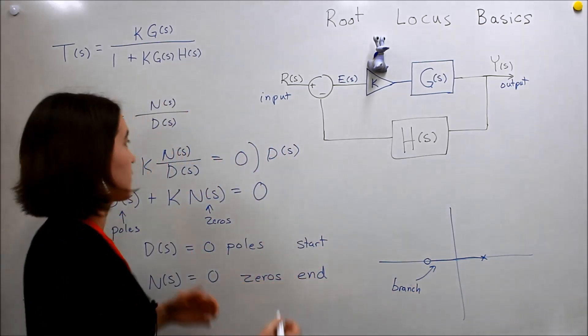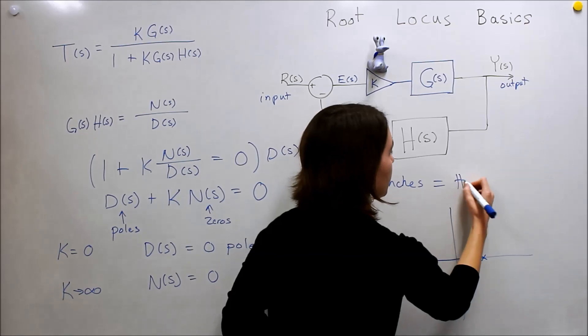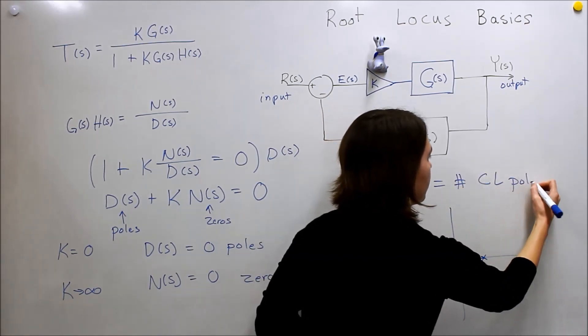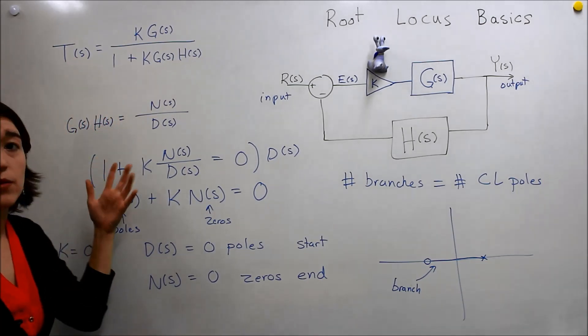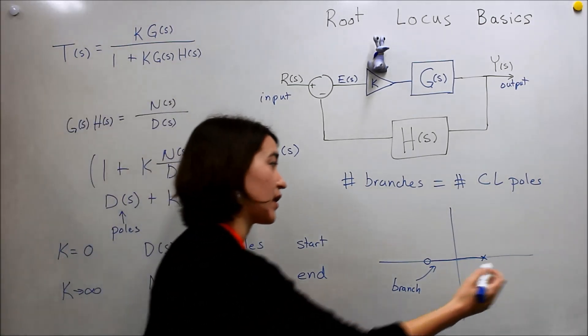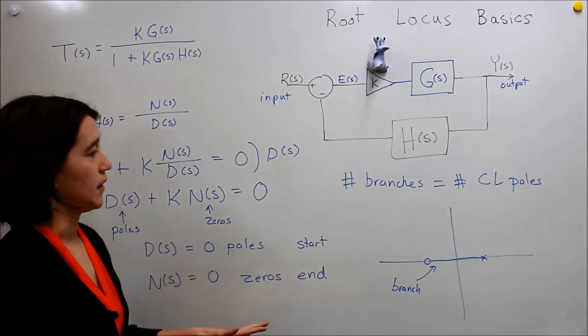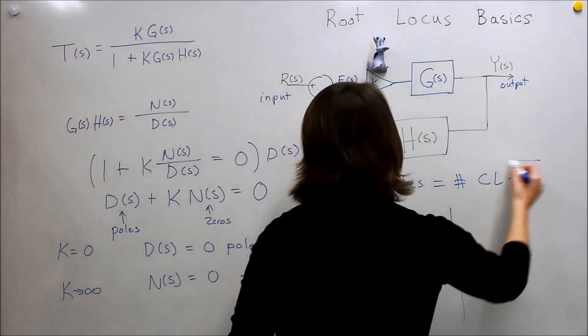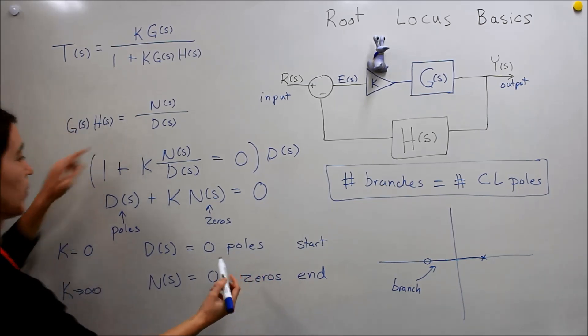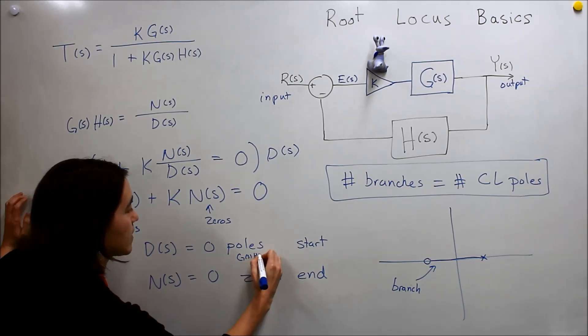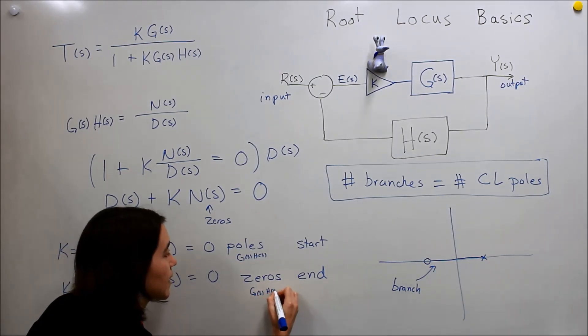The number of branches for a system is equal to the number of closed-loop poles. So if we have, it's the closed-loop, this full expression, so if we have one, we'll have one branch. If we have twenty, we'd have twenty different branches, so we have twenty different lines that are going to map from K value equaling zero to infinity. The important things that you need to remember here are the number of branches that we're going to see are the number of closed-loop poles, and we start at the poles of G(S)H(S), that's where we start, and we end at the zeros of our G(S)H(S) equation.